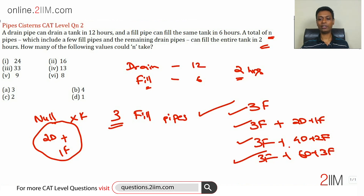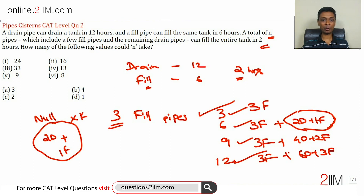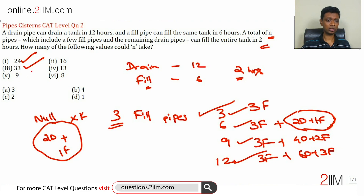So which numbers can be formed this way? Two drain plus one fill is three pipes, so we could have three pipes, six pipes, nine pipes, or twelve pipes — I'm adding a three-pipe null system to the base of three fill pipes. So n must be a multiple of three. Looking at the answer choices: 24, 33, 9 would work; 16, 13, 18 won't work — three of the numbers satisfy the condition.